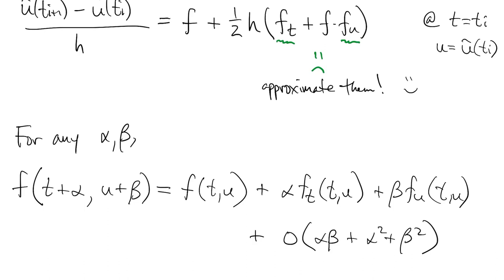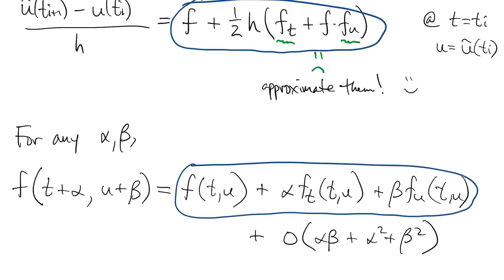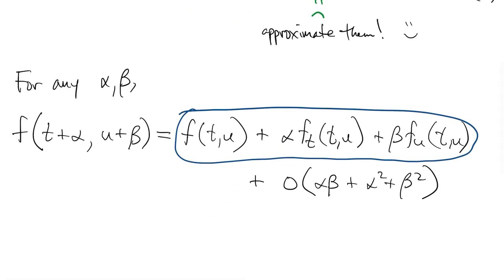Comparing this now to the expression we got for the truncation error in terms of f and its partial derivatives, we see that we can match the beginning of this by putting alpha equal to h over 2 and beta equal to h over 2 times f.